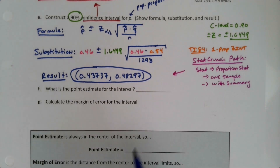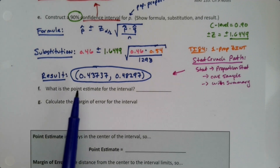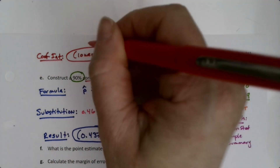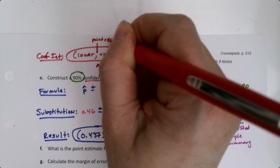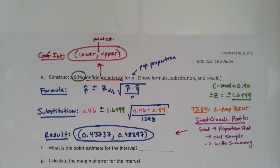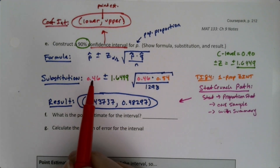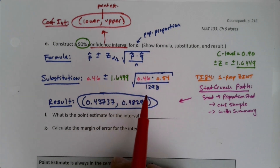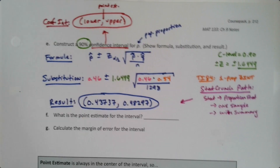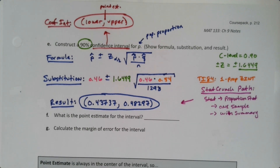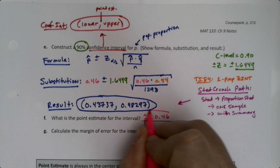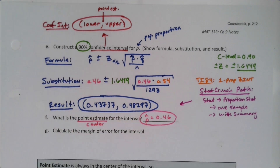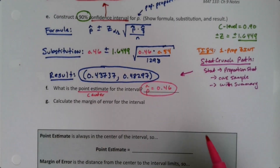Now that we found the confidence interval, we're going to answer a bunch of questions about it. The first one is: what is the point estimate for the interval? Confidence intervals are always written as (lower, upper), and the point estimate is right in the middle. So the point estimate is 0.46 — that's p-hat — because that's the center of the interval. That's what point estimate means: it's the center of the interval.